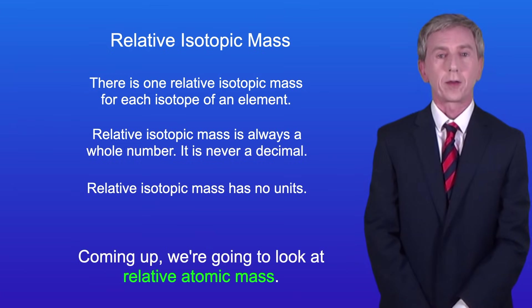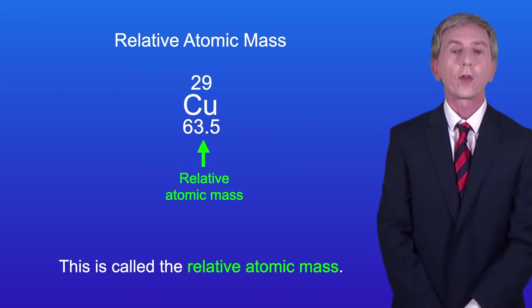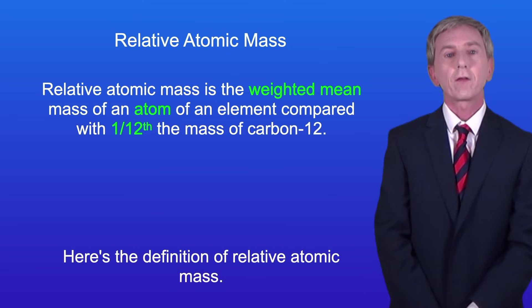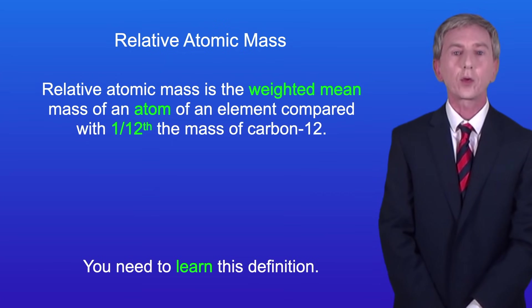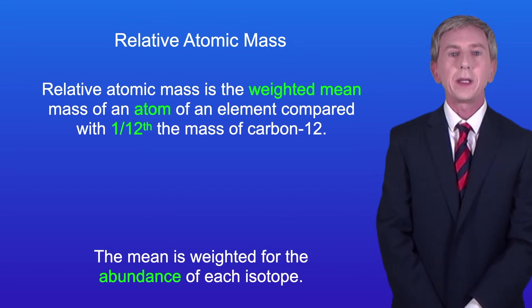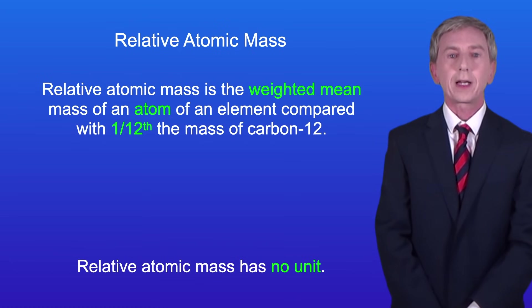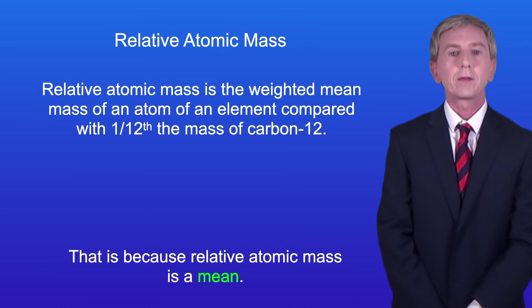Coming up we're going to look at relative atomic mass. If you look in your periodic table you can see that the mass number for copper is actually 63.5. This is called the relative atomic mass and we calculate this value from the relative isotopic masses. Relative atomic mass is the weighted mean mass of an atom of an element compared with one twelfth the mass of carbon-12. The mean is weighted for the abundance of each isotope — in other words, how common an isotope is. Again, relative atomic mass has got no units. Virtually all of the relative atomic masses in the periodic table are not whole numbers because relative atomic mass is a mean.